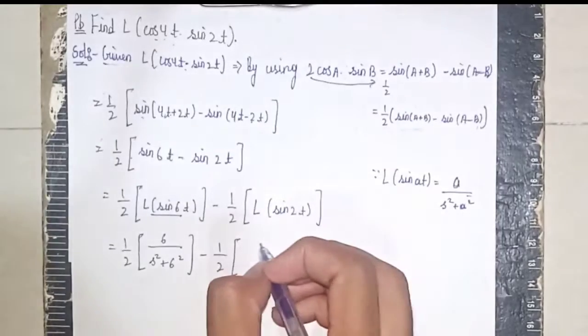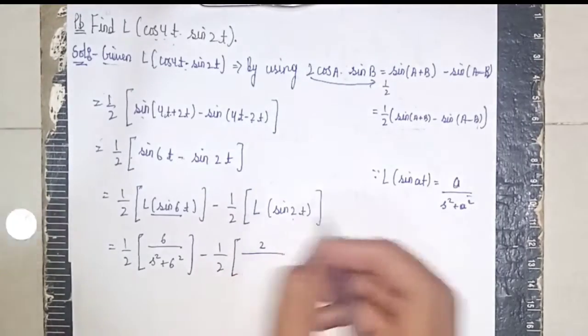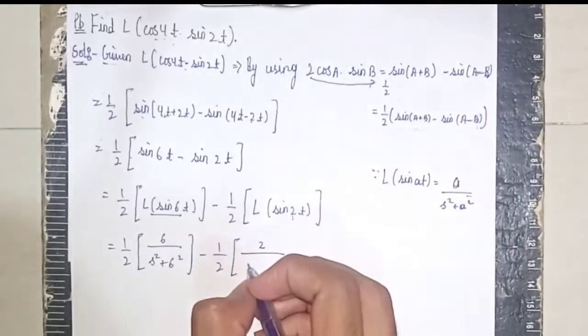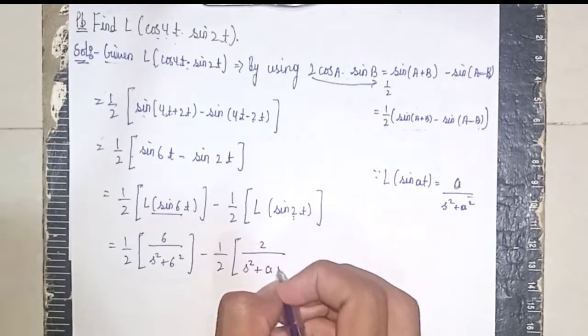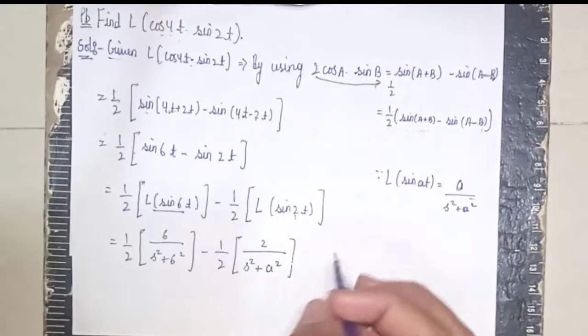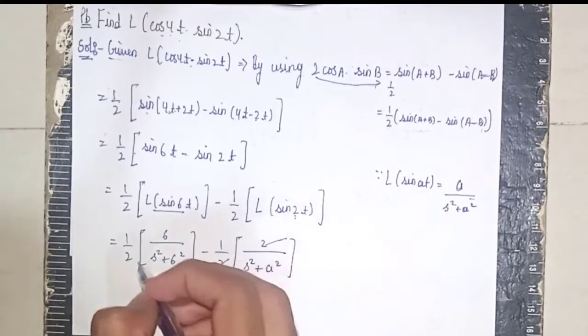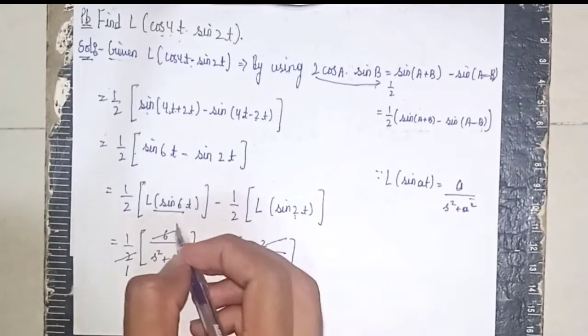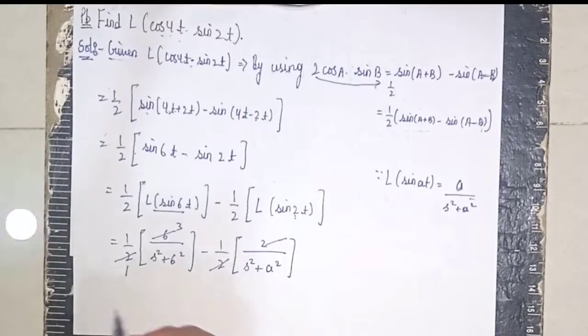Minus 1 by 2 open the bracket, now here same formula, a is 2, so 2 by (s squared plus 2 squared), close the bracket. Now here the 2s get cancelled, 2 1s are 2, 3s are 6.